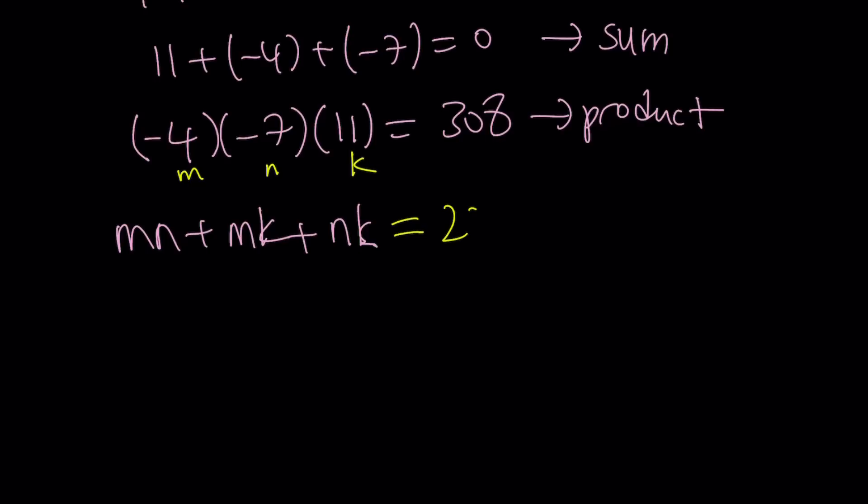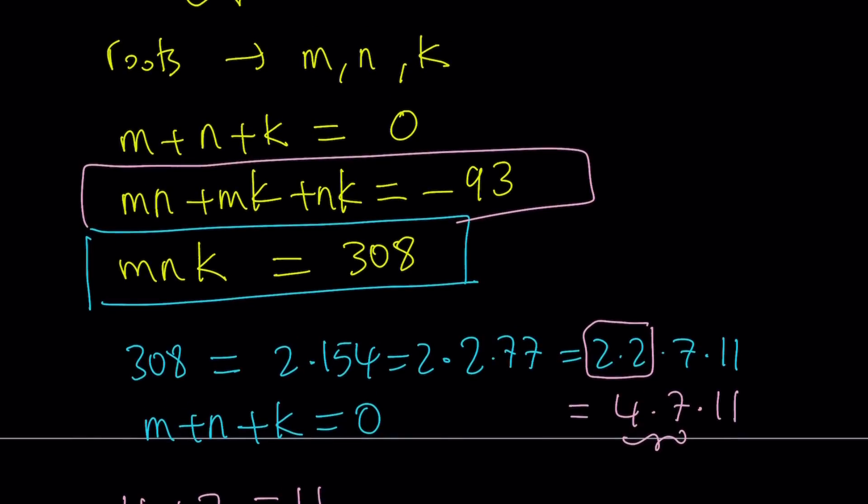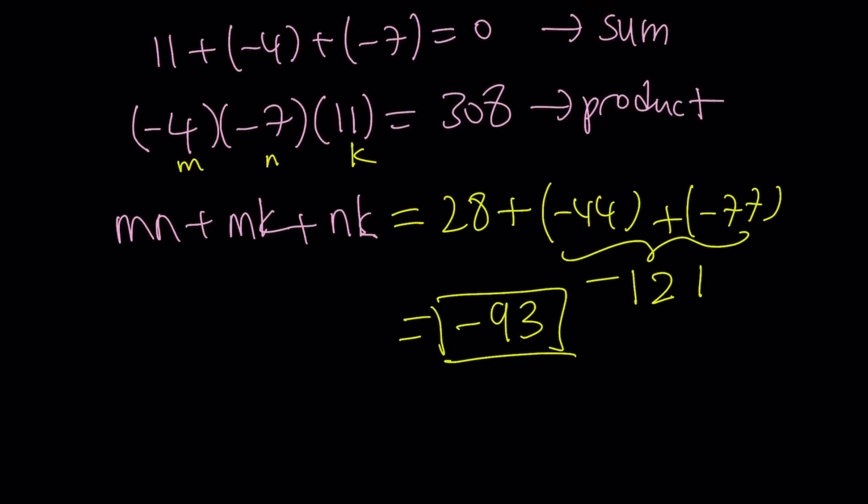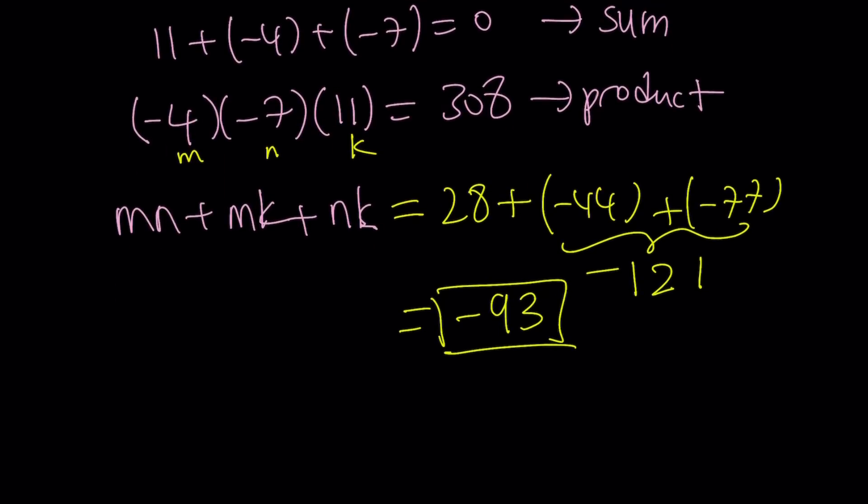mn, that is 28, plus mk, that is negative 44, and nk, negative 77. These two will make 121, but that's a negative. So 28, if you add them up, you're going to get negative 93. What? You can't be serious. Yes, I am serious. We get the sum. It's not a coincidence. Of course, this problem is contrived, as some people call it. Of course, it's been arranged. But it's still fun.